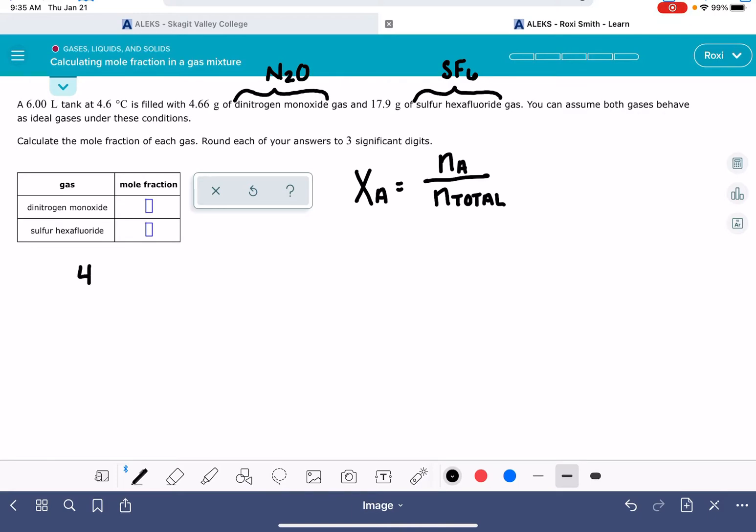So we're going to begin by converting the 4.66 grams of N2O into moles of N2O. One mole of N2O, we're just going to add up the mass of the nitrogen and oxygen atoms and that's about 44 grams per mole.